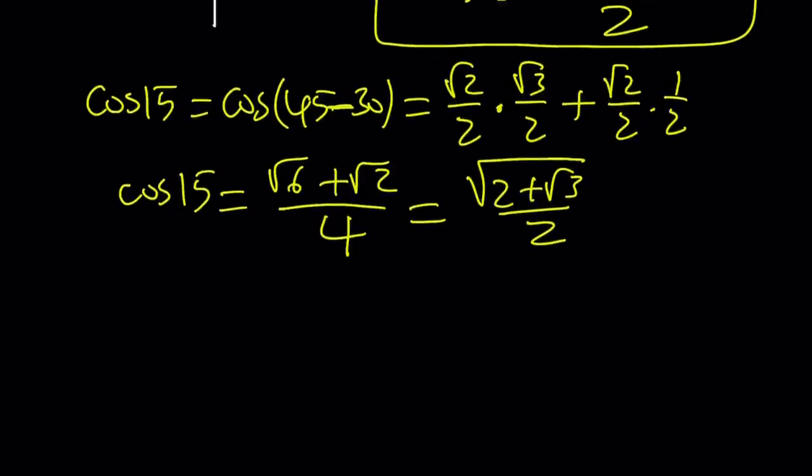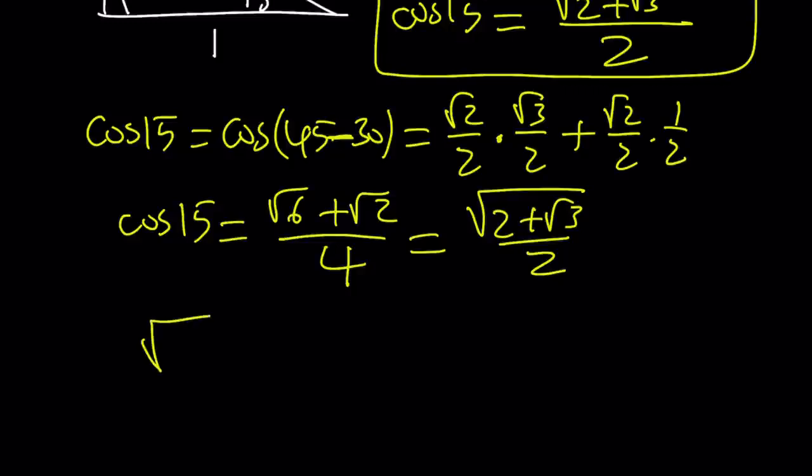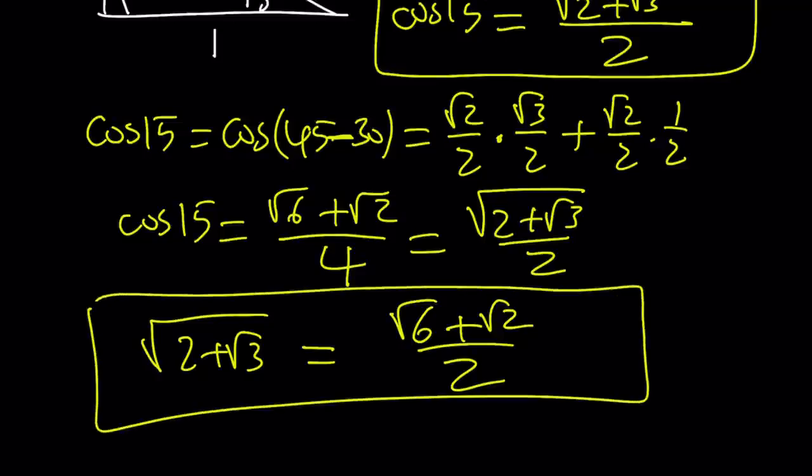And from here, we're looking for this, yay. So, square root of 2 plus root 3, if you multiply both sides by 2, you get root 6 plus root 2 over 2 as our answer. I know it's a very convoluted, complicated way, but it is a method.